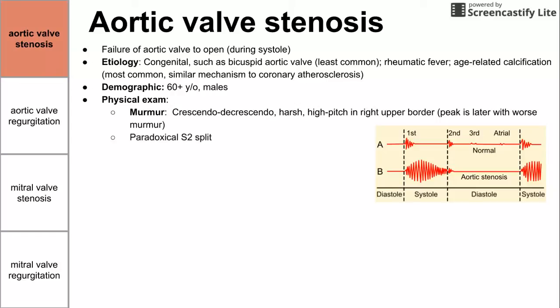You do see a paradoxical S2 split. Normally the aortic valve shuts before the pulmonary valve, but here the pulmonary valve may close before the aortic valve. We do have a carotid pulse that is parvus et tardus, meaning weak and late. We might also hear rales in the lungs, which is a crackling sound. The ECG shows left ventricular hypertrophy, which is a result of aortic valve stenosis.